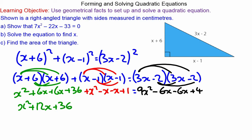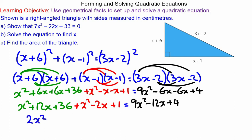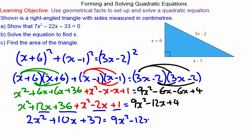So we have x² + 12x + 36 + x² - 2x + 1 = 9x² - 12x + 4. Collecting like terms, we have 2x² on the left-hand side, plus 10x, plus 37, equals 9x² - 12x + 4.